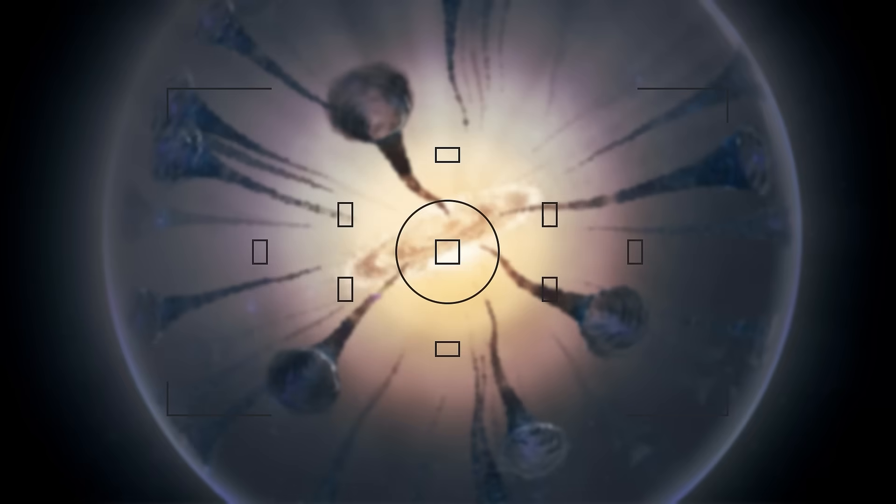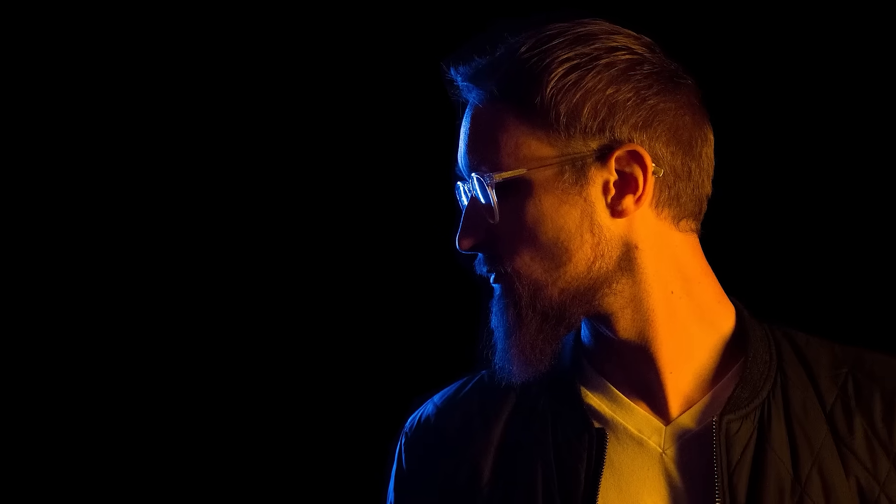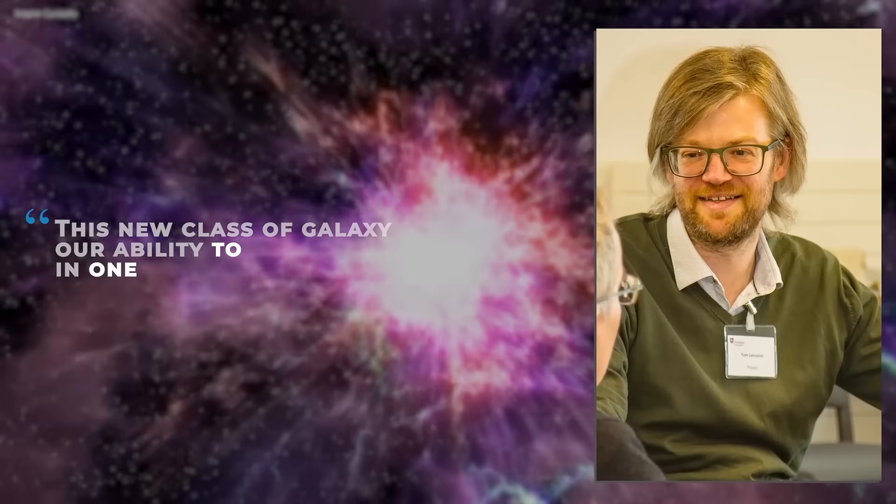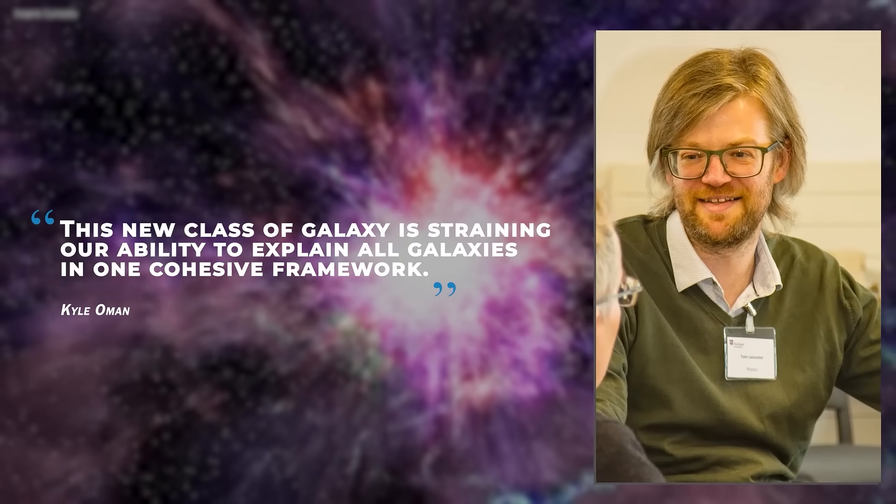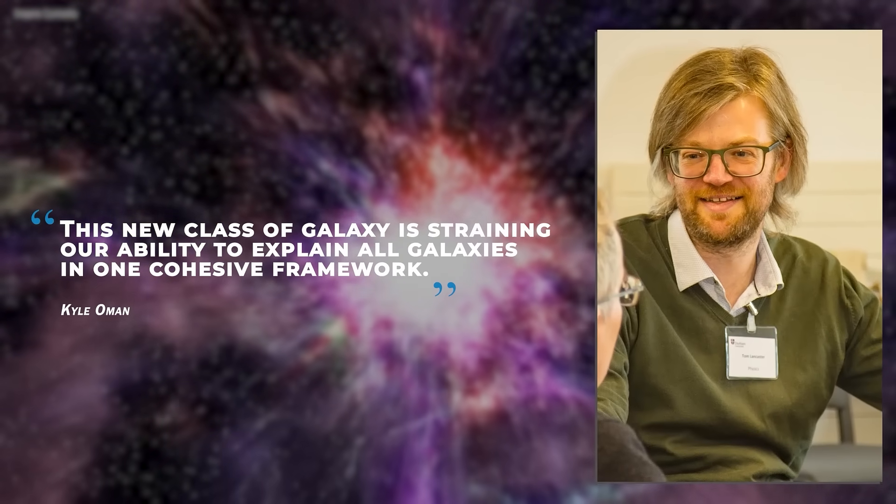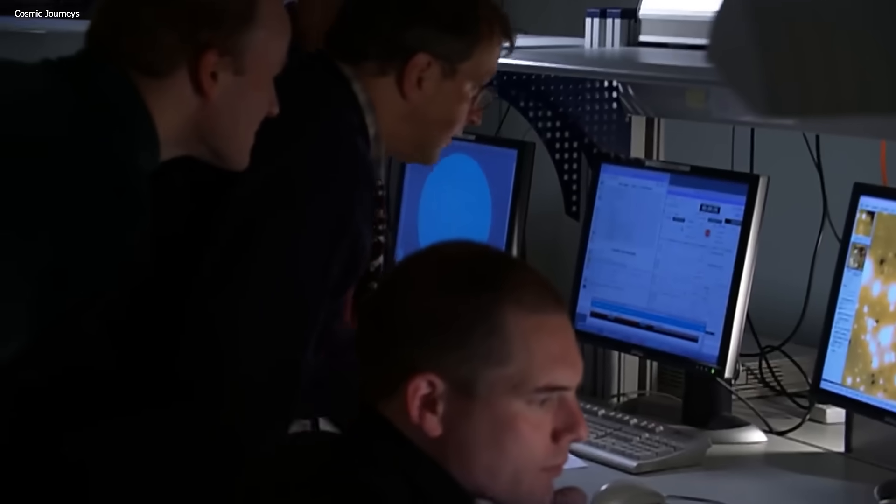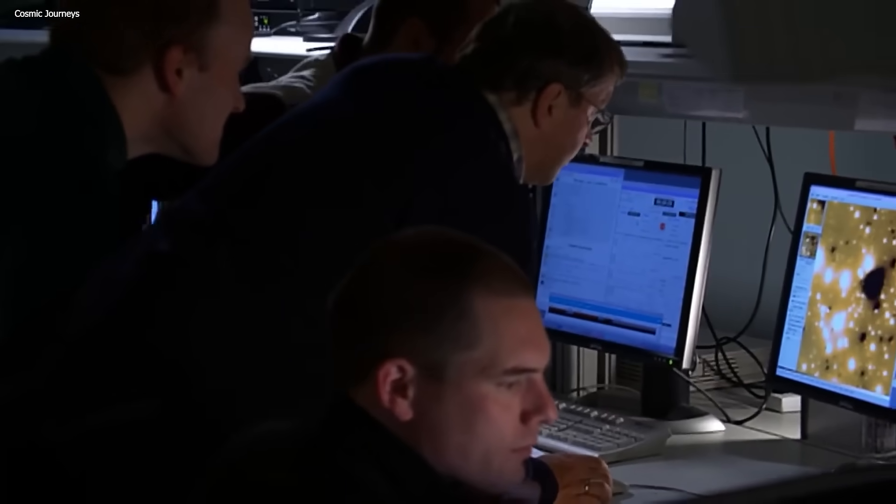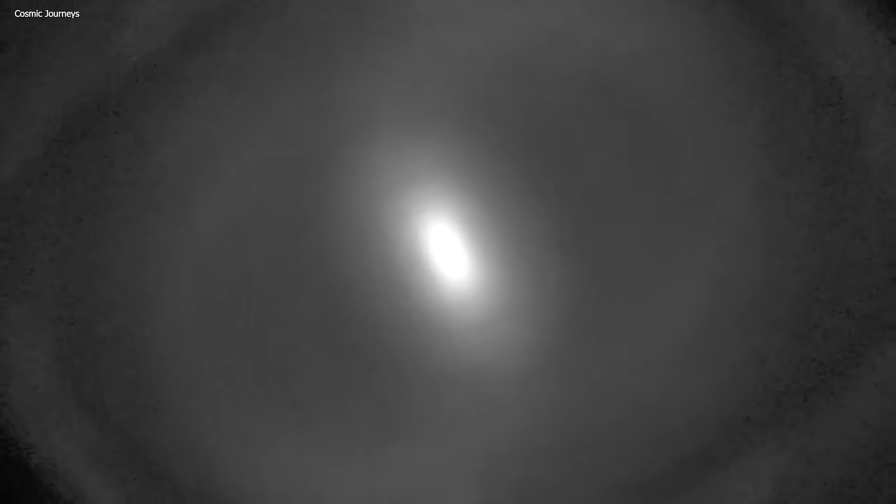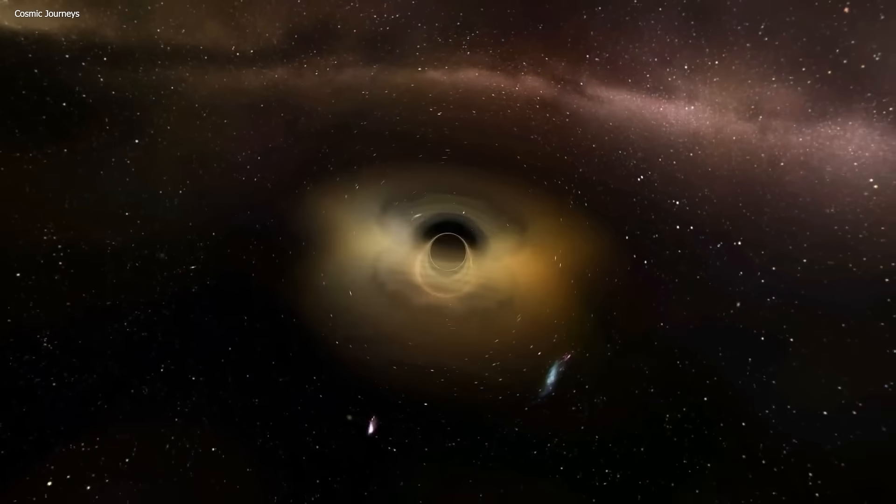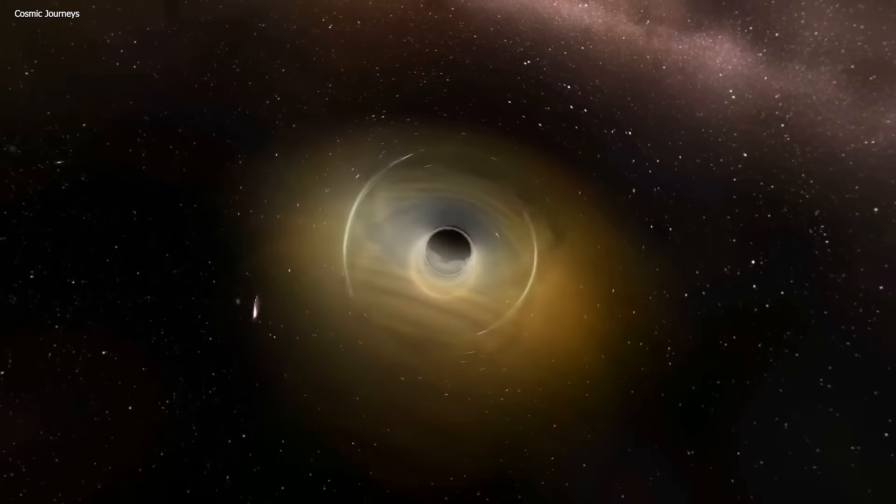Kyle Oman, an astrophysicist at Durham University in England, says this new class of galaxy is straining our ability to explain all galaxies in one cohesive framework. It's a mystery that has scientists around the world working together because everyone wants to get to the bottom of this mystery. In 2016, Oman and his colleagues identified two galaxies that appeared to be missing dark matter. A while after that, two more oddballs turned up, and now we have 19 in total.